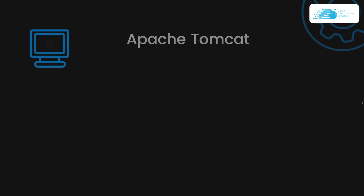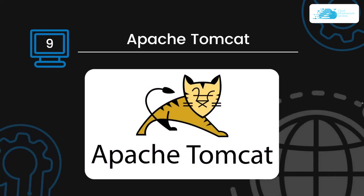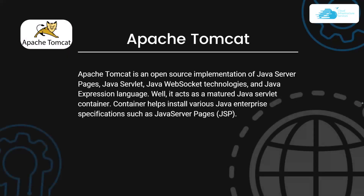At number 9 we have Apache Tomcat. Apache Tomcat is an open source implementation of Java Server Pages, Java Servlet and Java Web Circuit technologies, and also the Java Expression Language. It acts as a mature Java Servlet container that helps install various Java enterprise specifications such as Java Server Pages.